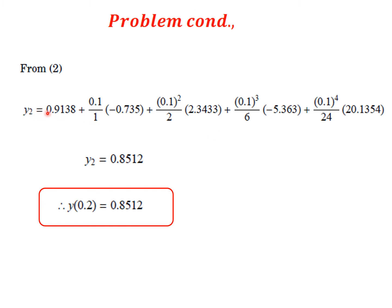Using the y2 formula: y2 = y1 + h/1!·y1' + h²/2!·y1'' + h³/3!·y1''' + h⁴/4!·y1'''', with h = 0.1 and all derivative values substituted. Simplifying gives y2 = y(0.2) = 0.8512.